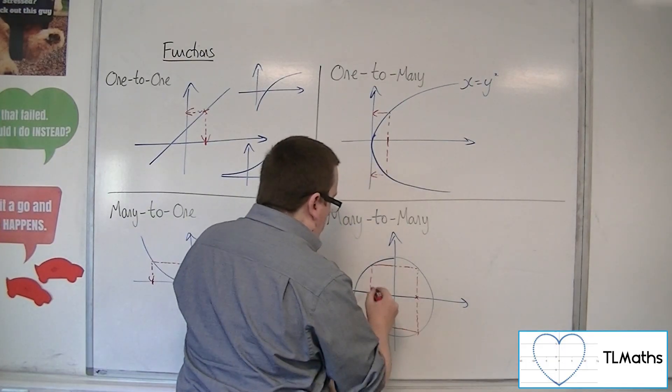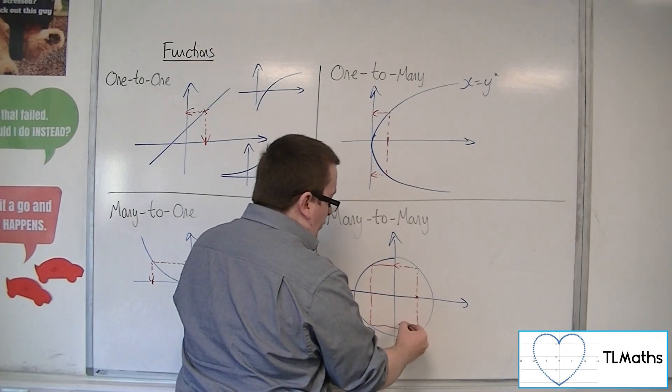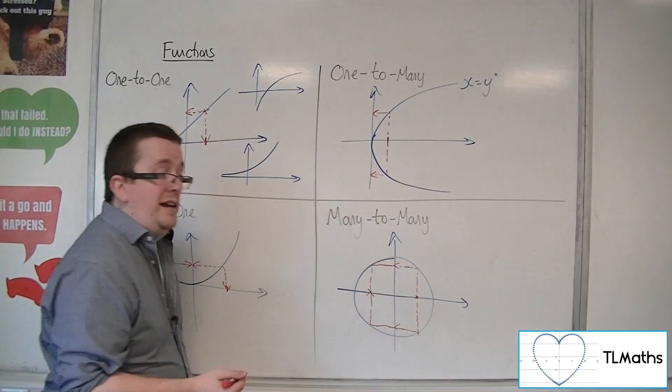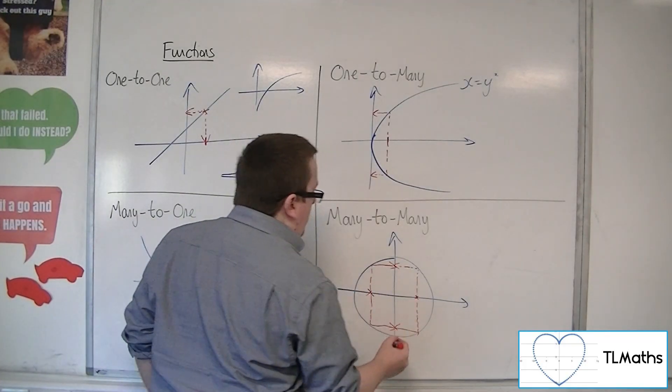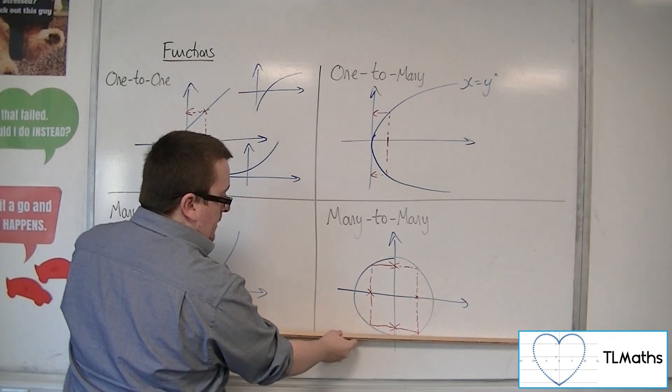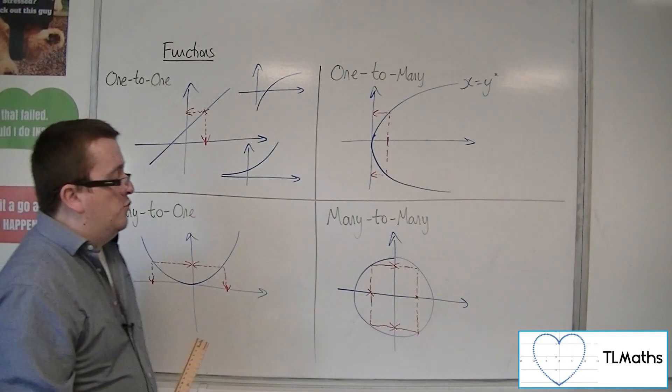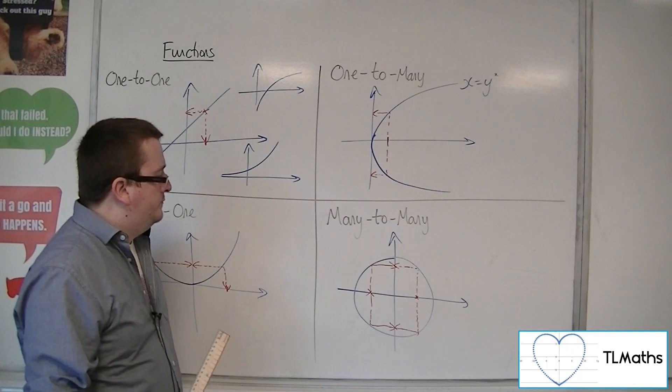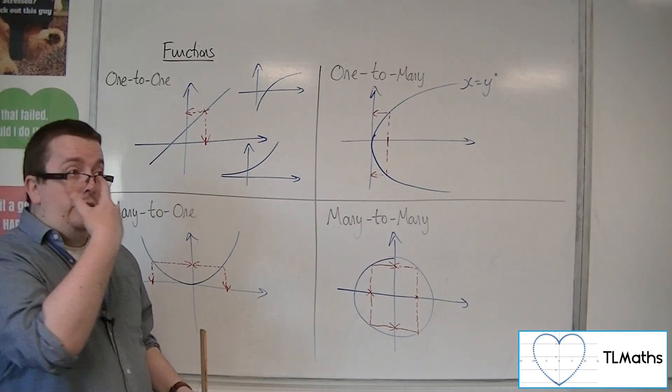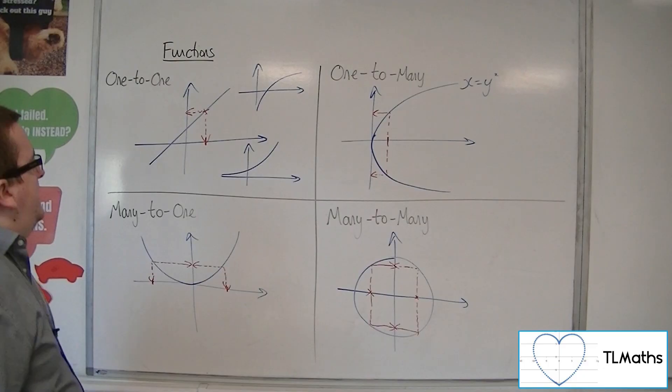One value of x here will get me two possible values of y, but I could get those values of y using multiple values of x. So it fails the horizontal line test and the vertical line test, where it cuts the graph in more than one place in both cases. This would be many-to-many, so circles, ellipses, spirals - these would be many-to-many.